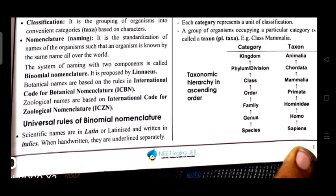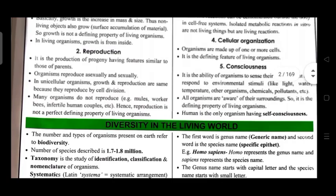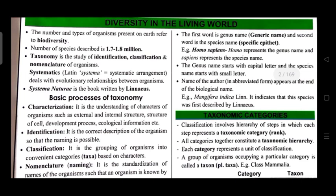Universal rules of binomial nomenclature: scientific names are in Latin or Latinized and written in italics; when handwritten, they are underlined separately. The first word is the genus name (generic name) and the second word is the specific epithet (specific name). For example, Homo sapiens — here Homo represents the genus name and sapiens the specific name. The genus name starts with a capital letter and the specific name with a small letter. The name of the author, in abbreviated form, appears at the end — e.g., Mangifera indica Linn., indicating this species was first described by Linnaeus.